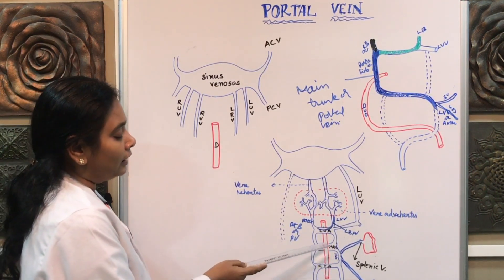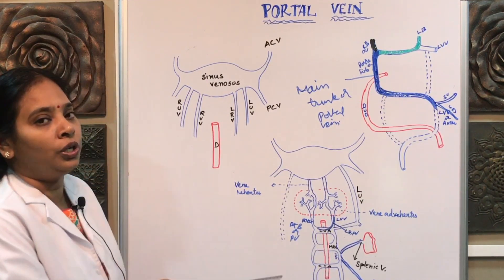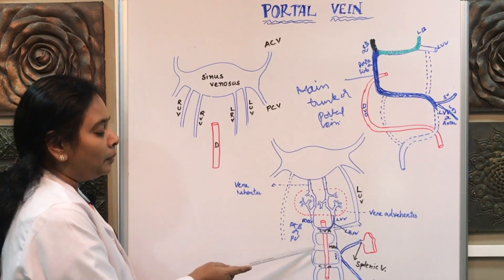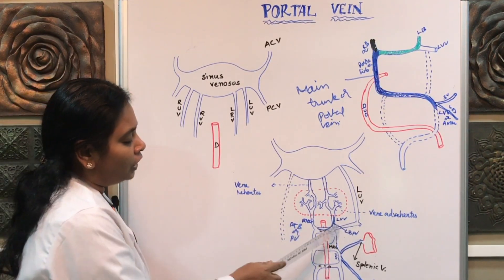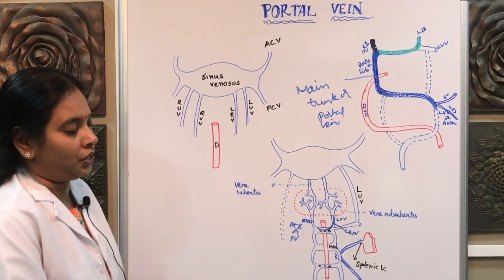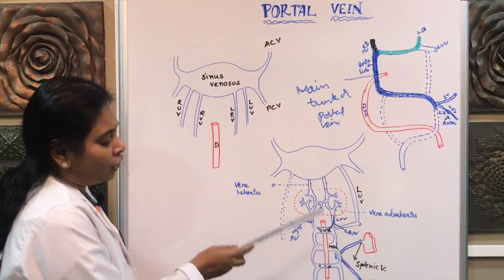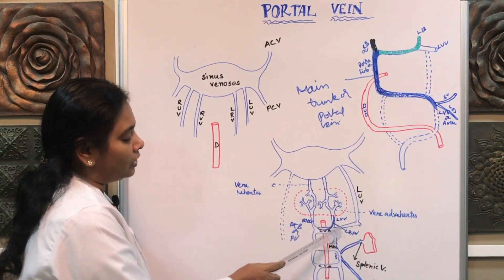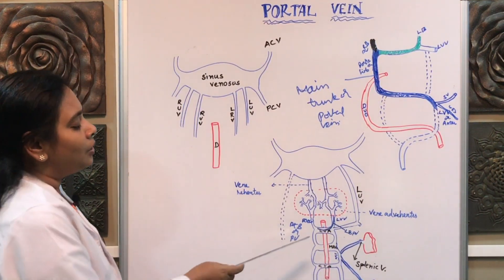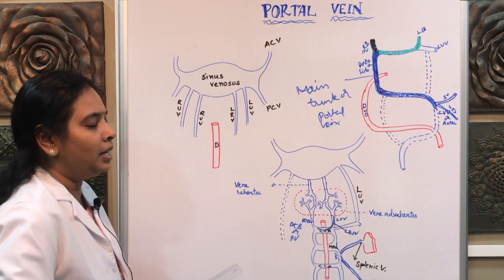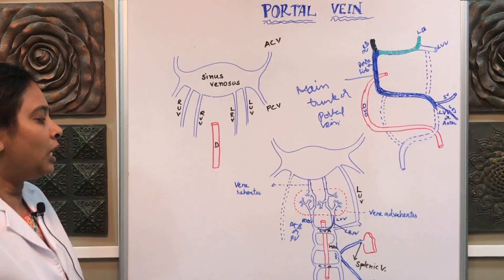In the middle region, the anastomosis is posterior to the duodenum, so it is called the middle dorsal anastomosis. On either side, there are two limbs of vitelline veins, and in between these two, three anastomoses. The entire structure now forms a figure-of-eight formation. This figure-of-eight formation is the basic structure which gives rise to the portal vein development.